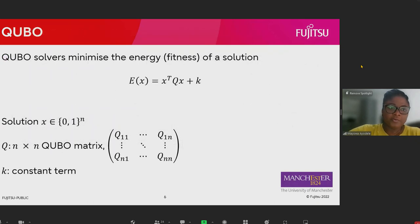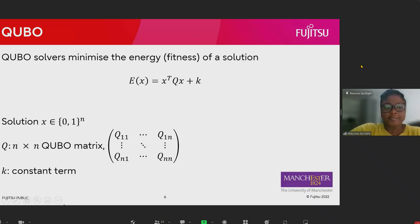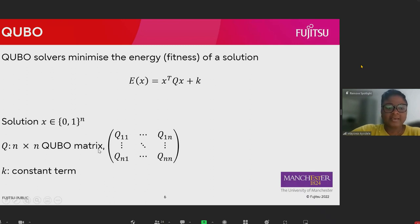In the QUBO formulation, we are trying to minimize the energy where x is our binary solution, Q is the QUBO matrix, and k is the constant term.